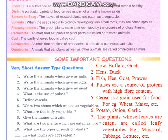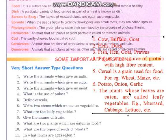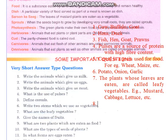After that, next question — 8th question: give the names of fruits. Write any: apple, grapes, mango — write whatever you want. Okay, write fruits. Number 9.